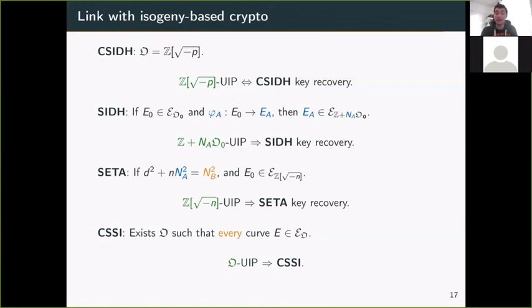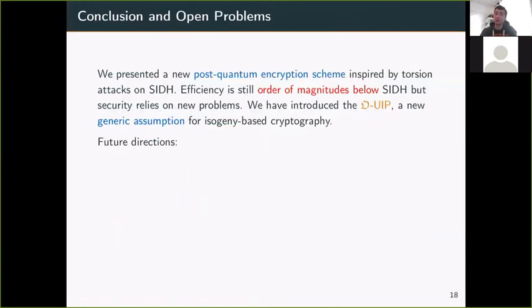I'll conclude my talk on this uber-isogeny assumption now. Just let me conclude briefly by saying we have introduced a new post-quantum encryption scheme whose mechanism is inspired by torsion point attacks on SIDH. We have made an implementation, and we saw that the efficiency is two orders of magnitude below SIDH, but we have new security problems which may introduce nice security versus efficiency trade-offs. We've also introduced a new generic isogeny assumption for isogeny-based cryptography.